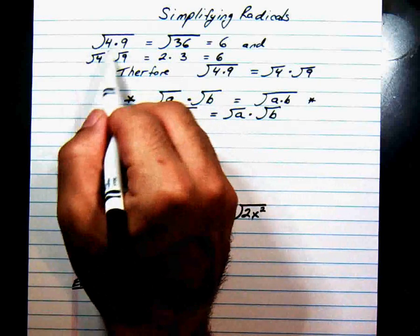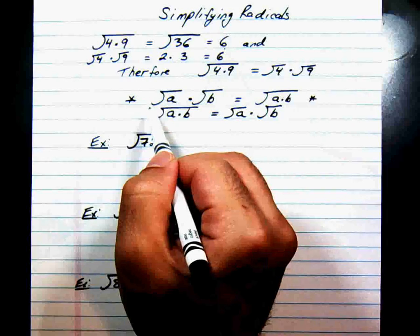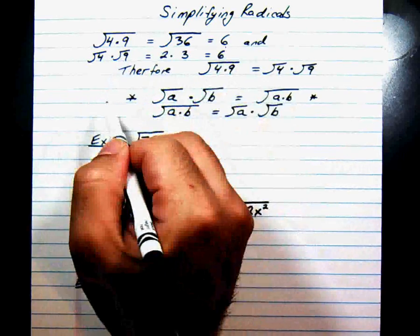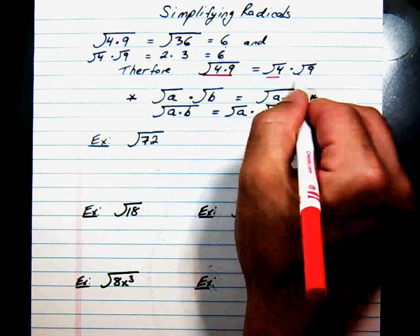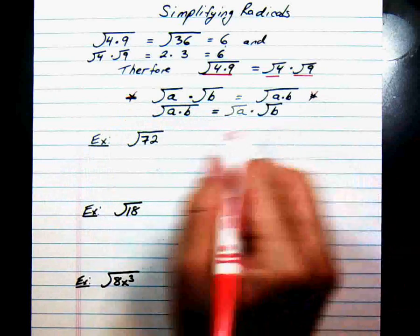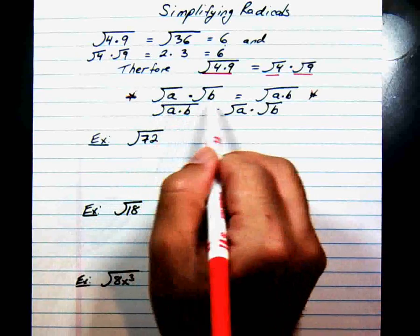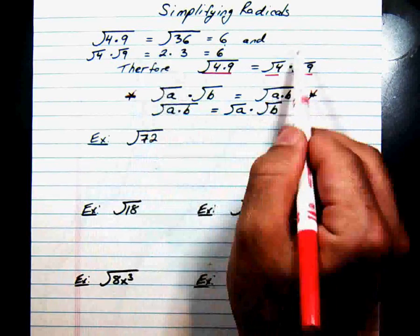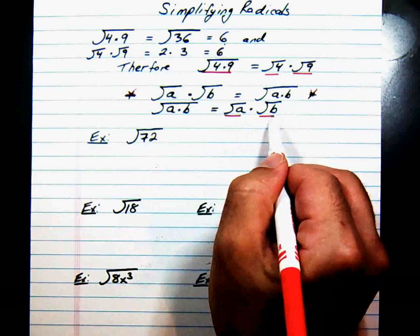The square root of 4 times 9 is the same thing as the square root of 36, which is 6. The square root of 4 times the square root of 9 is 2 times 3, which also gives you 6. So the square root of 4 times 9 equals the square root of 4 times the square root of 9. This identity says we can split radical expressions and also put them together: the square root of a times b equals the square root of a times the square root of b.